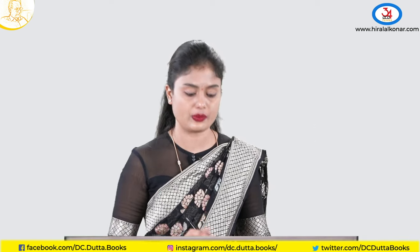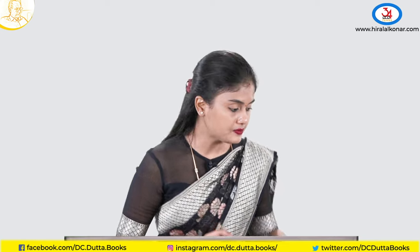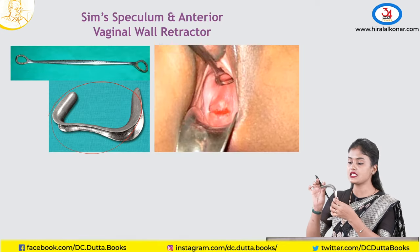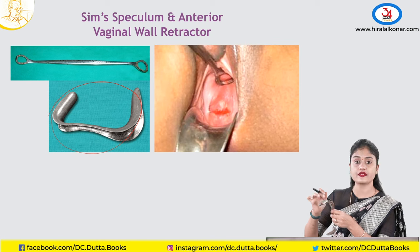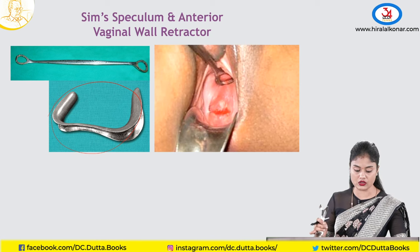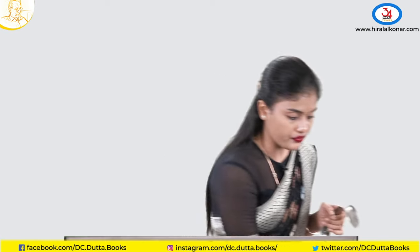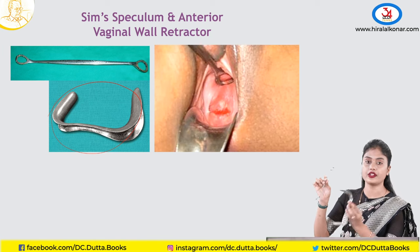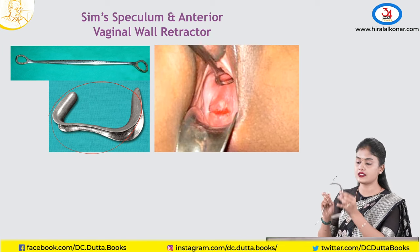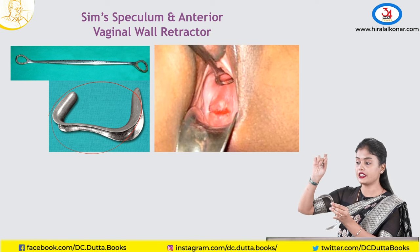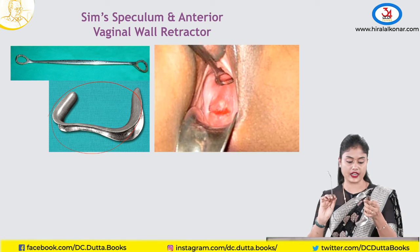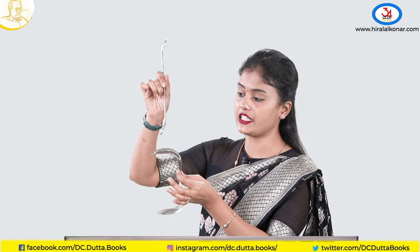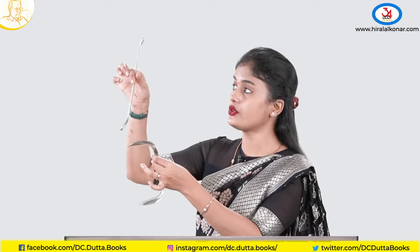Coming to the most commonly used instrument — the Sims speculum. This is a bivalved Sims speculum. You can see a groove on it which helps collect secretions from the vagina or cervix. This instrument cannot be used alone — it is always used in combination with the anterior vaginal wall retractor, because the Sims speculum only retracts the posterior vaginal wall.